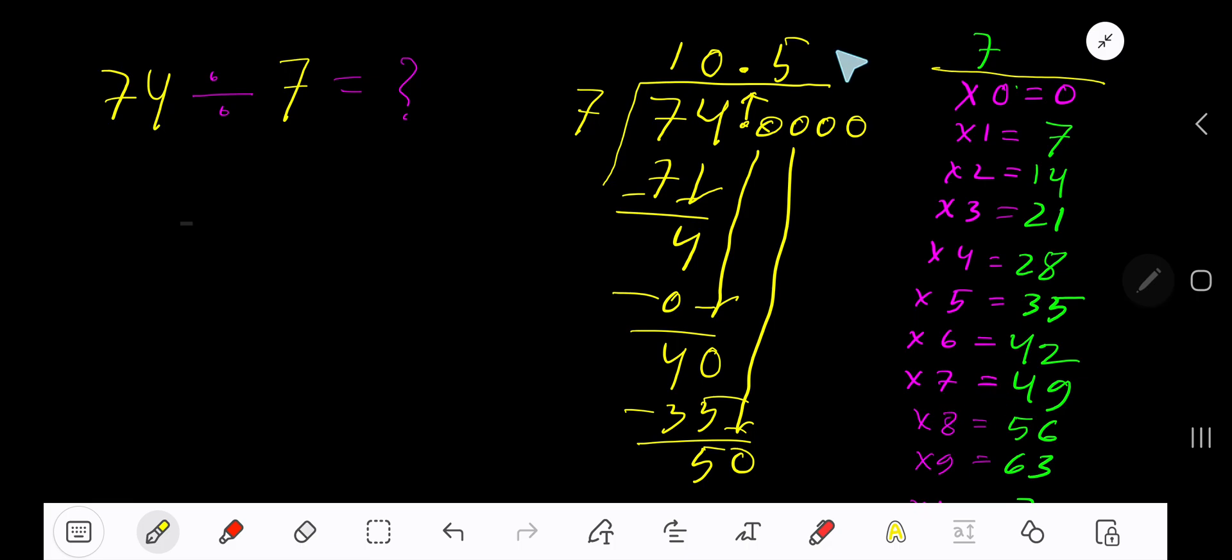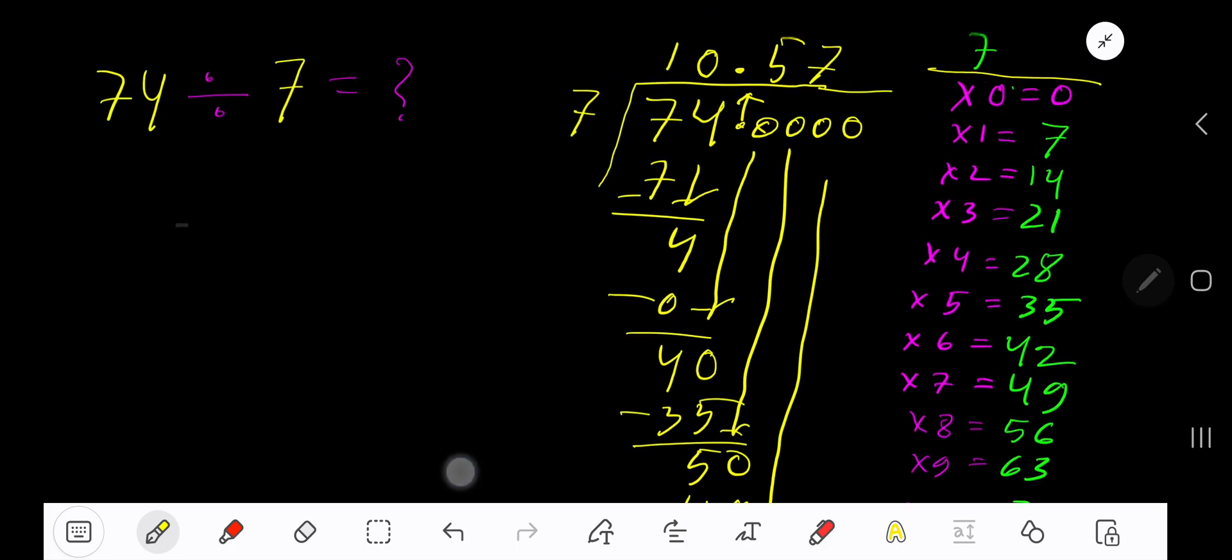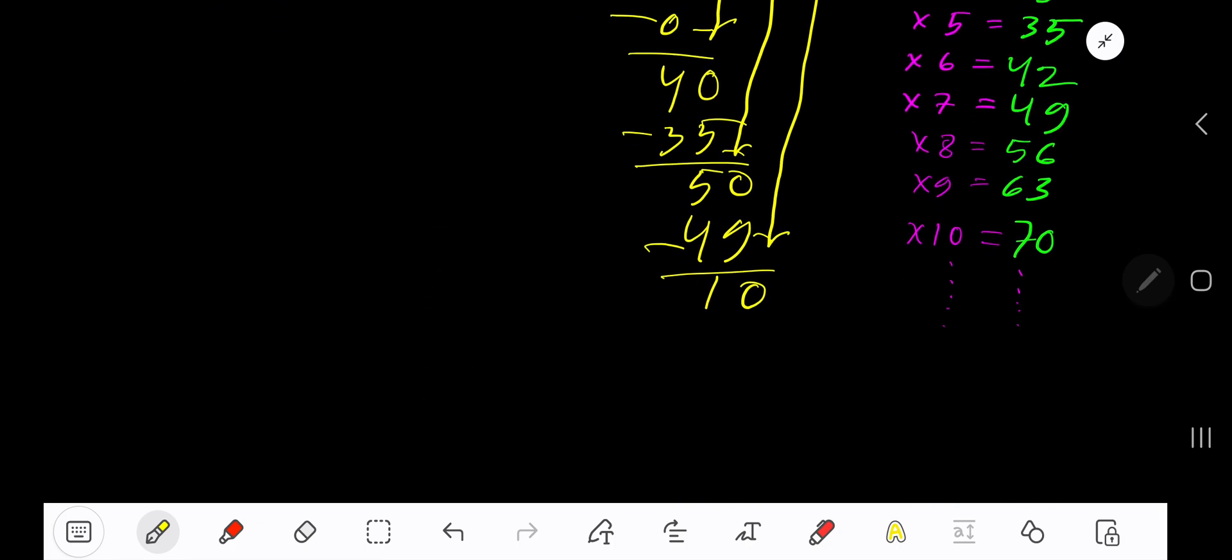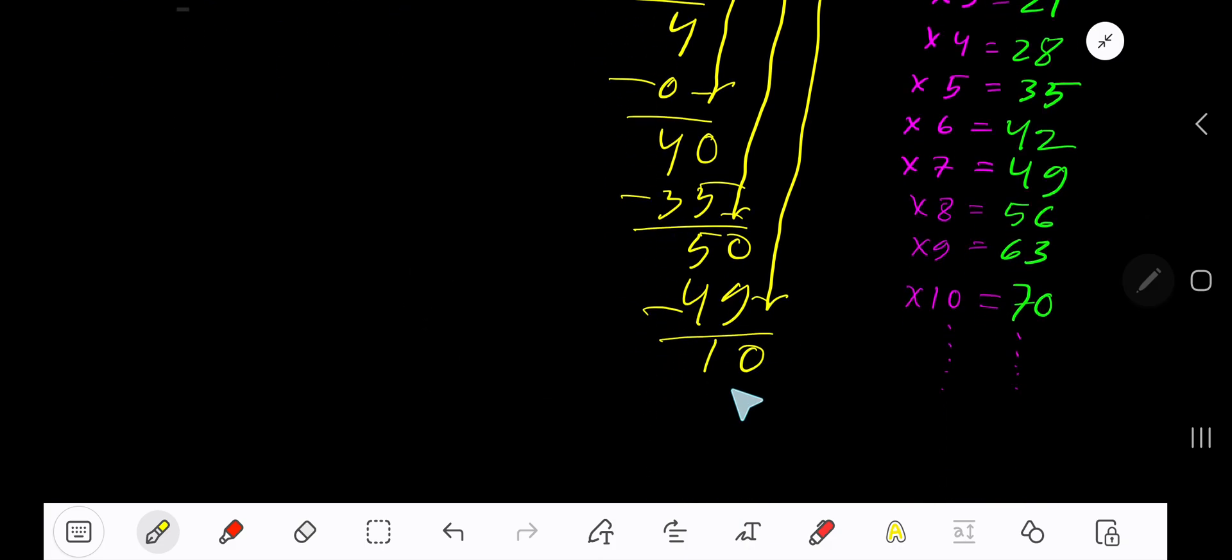7 times 7 is 49. Subtract to get 1. Bring down another 0 to get 10. 7 goes into 10 how many times? Look here, 2 times is 14, which is too big, so 1 time. 1 times 7 is 7.